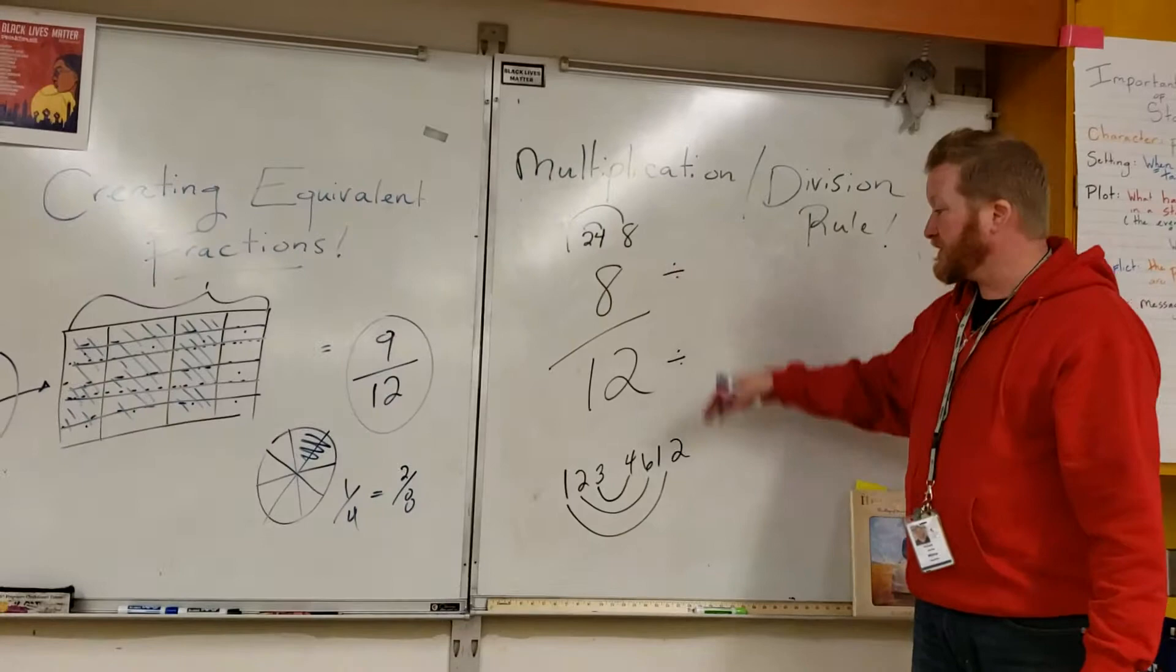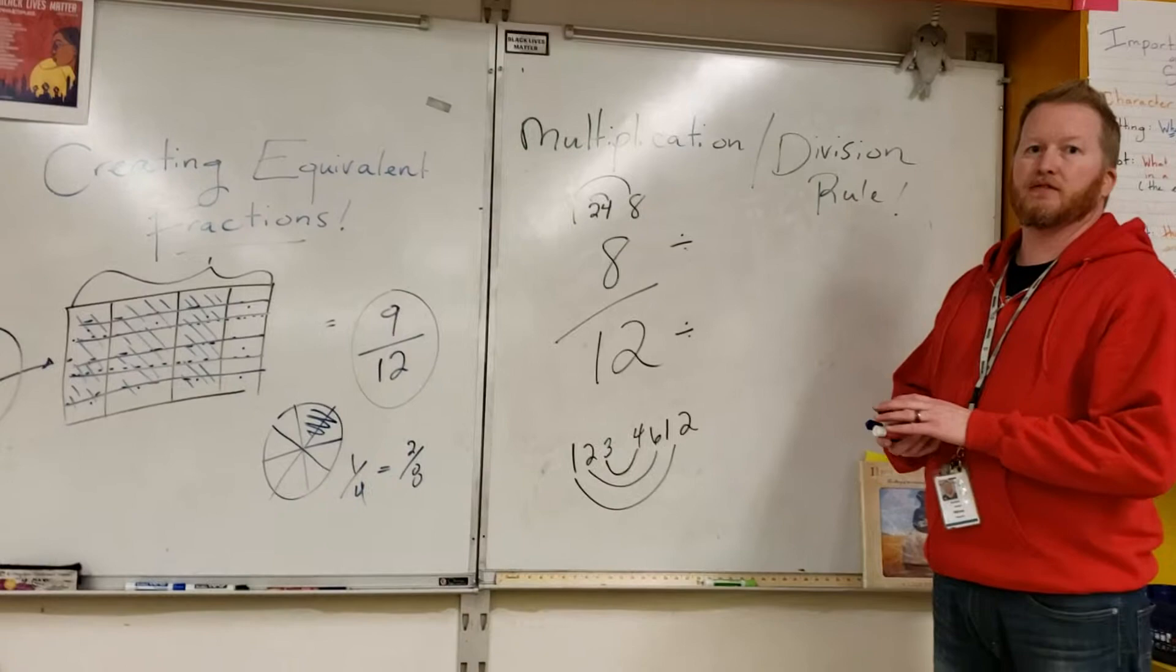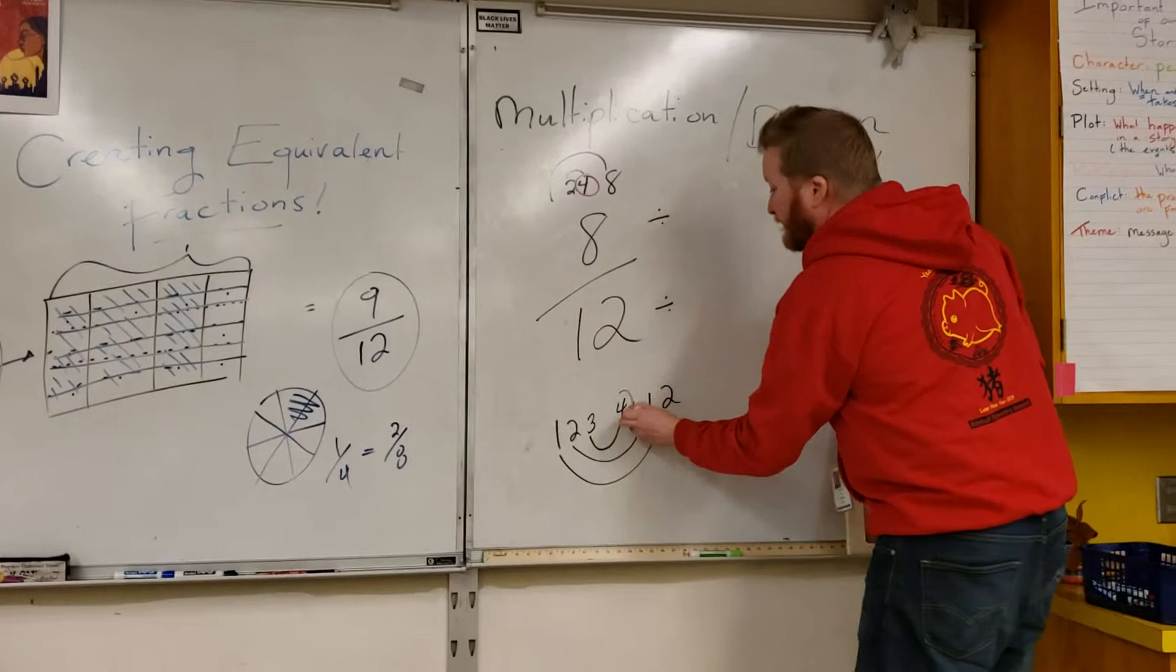Lily, looking at both of these lists of factors, what number do you see on both? Four. We could have also done two.